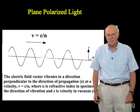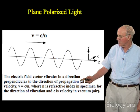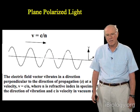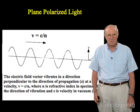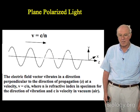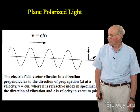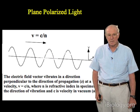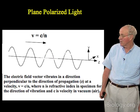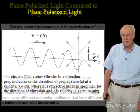Let me begin by reminding you that light propagates, in this case in the z-axis direction, as a transverse vibrating electrical and magnetic wave. The vibrations are perpendicular to the direction of propagation. The velocity of propagation, v, is given by c divided by n, where n is the refractive index, c is the velocity of light in a vacuum, and n is the refractive index of the media through which the light is propagating.